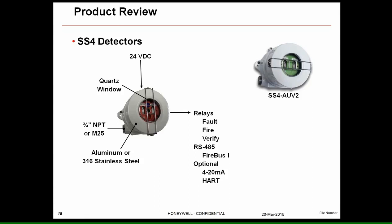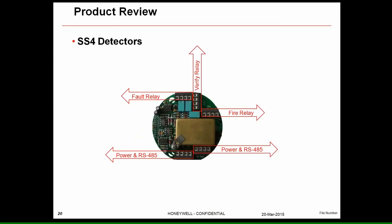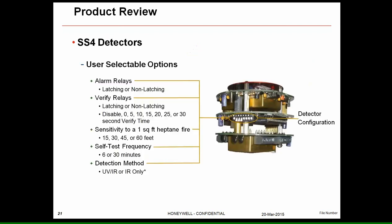The SS4 uses Firebus 1 on RS-485. An optional 4–20 mA card was developed, though it uses the fault and fire contacts to generate the 0 mA fault and 20 mA fire signals. A later HART board mounts to the very bottom of the unit, accesses the Firebus 1 signal, and provides HART over 4–20 mA without consuming any of the relay positions — so you keep all three fault, fire, and verify relays intact. This detector also has a through-the-lens self-check and switch-selectable options.